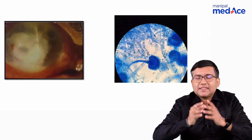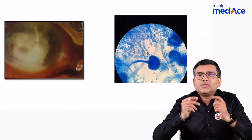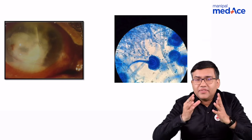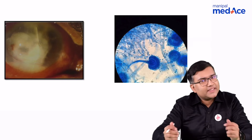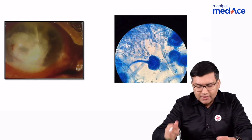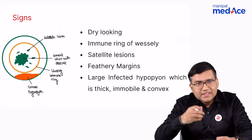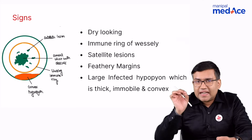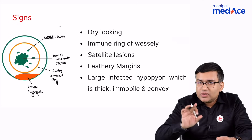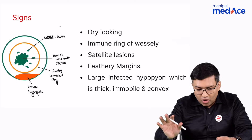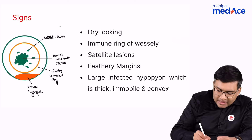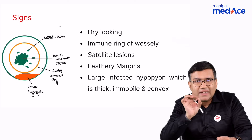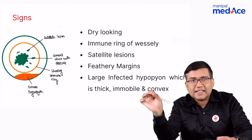Now, very important — whenever you see a fungal corneal ulcer, what are the various important clinical features that you should remember? From this image, the most important thing when you see a fungal corneal ulcer is that you think about the satellite lesions. There is a main lesion, and there are satellite lesions.